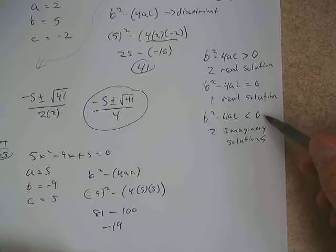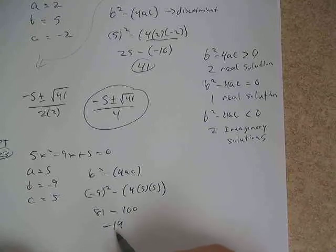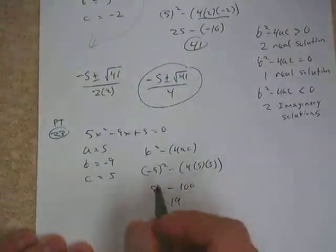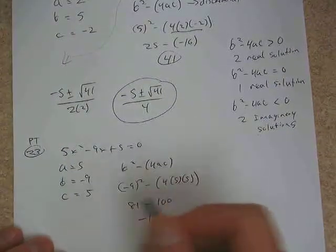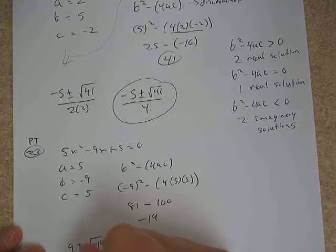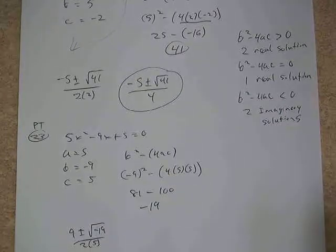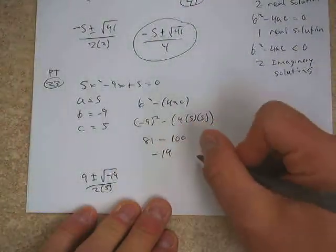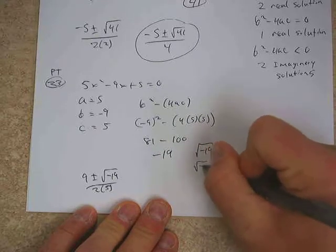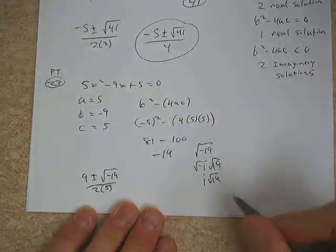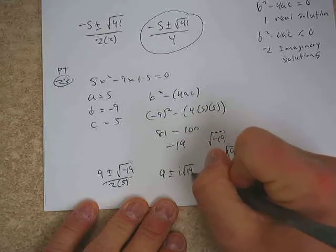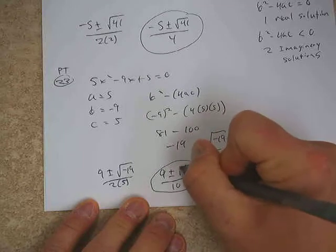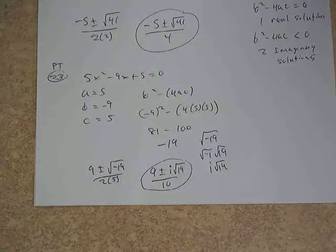Since the discriminant is negative 19 — less than 0 — we get two imaginary solutions. In the formula: opposite of b (negative 9) is positive 9, plus and minus the square root of negative 19, all over 2 times 5. We simplify the radical: square root of negative 19 becomes i radical 19, since 19 is prime. Our final answer is 9 plus and minus i radical 19, all over 10.